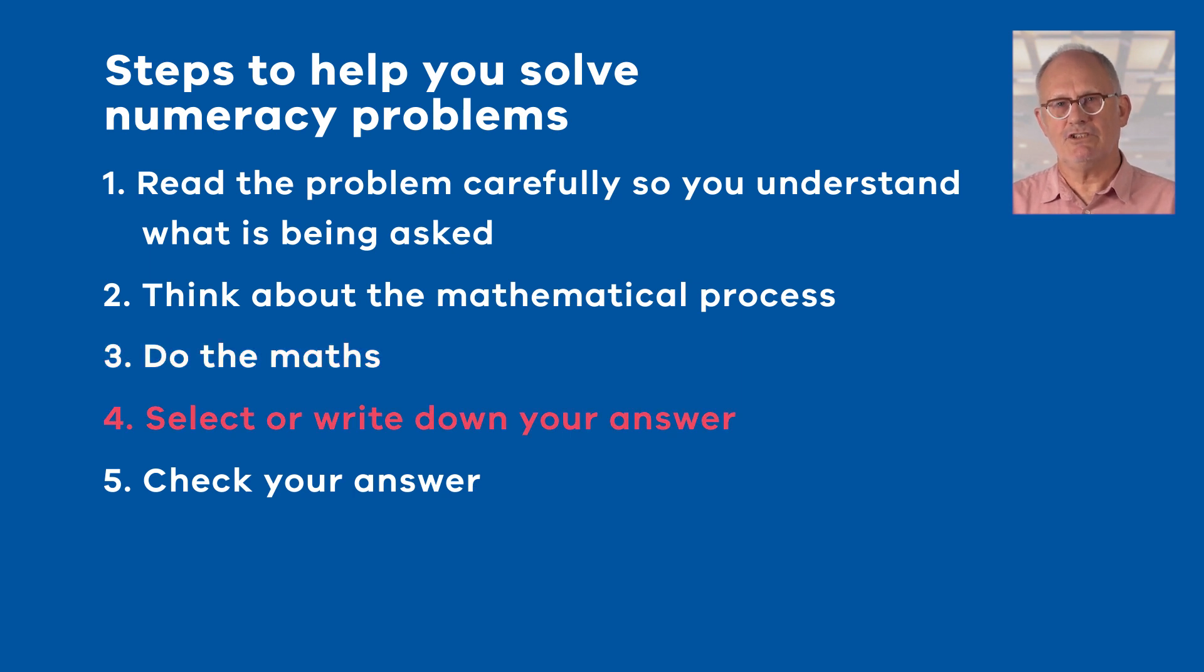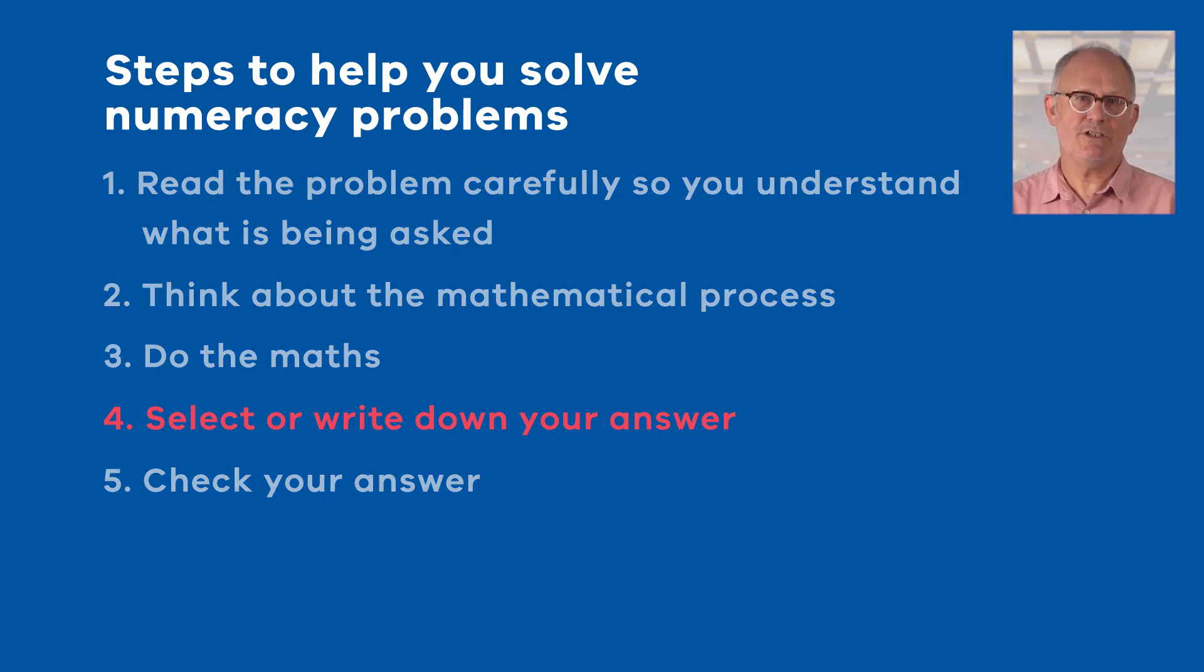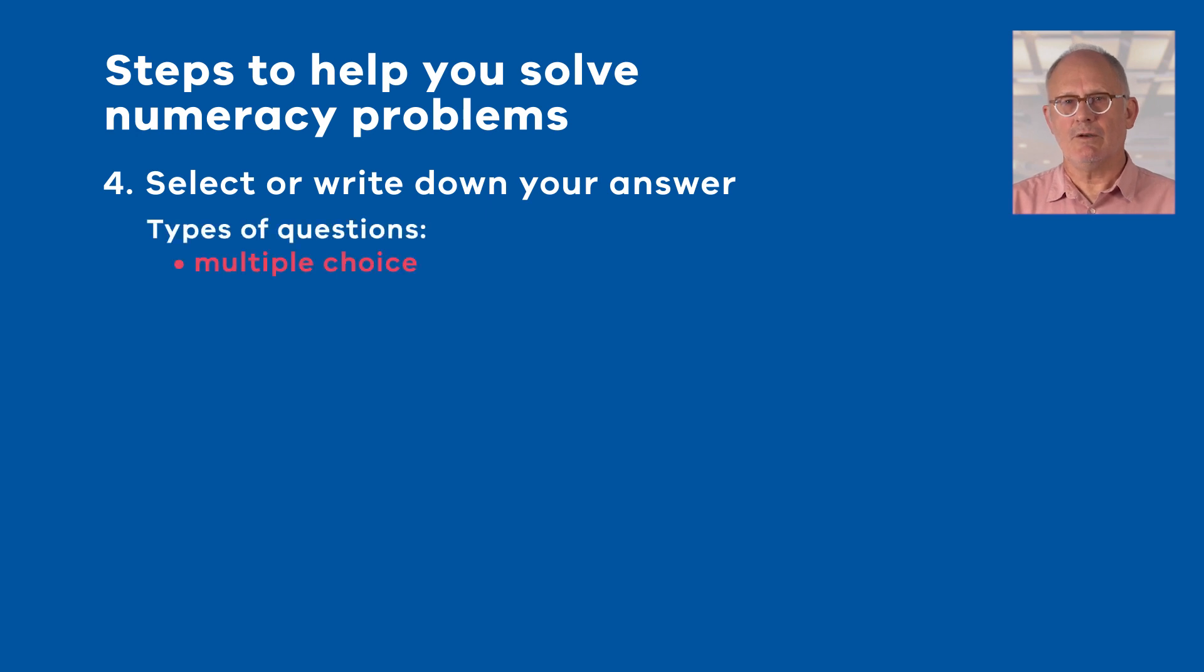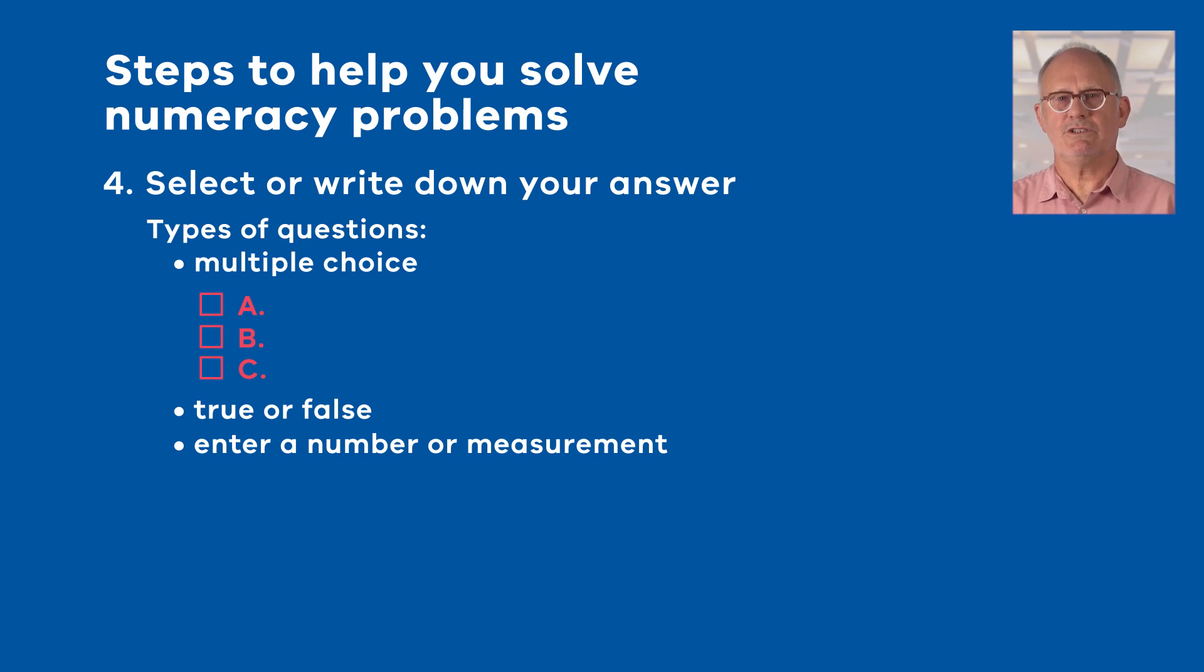The fourth step is to select the correct answer or write down your answer. Make sure you answer the question in the right way. Of course this depends on the type of question it is. In the numeracy skills section of the exam you may find multiple choice questions or true and false type questions or questions where you have to enter a number. In numeracy, the multiple choice questions require only one answer. With multiple choice it's a good idea to eliminate the answers that you know are wrong straight away. If none of the alternatives provided seem close to your answer then reread the question and try and work out what you have done incorrectly or what you might have missed. There is always one correct option.